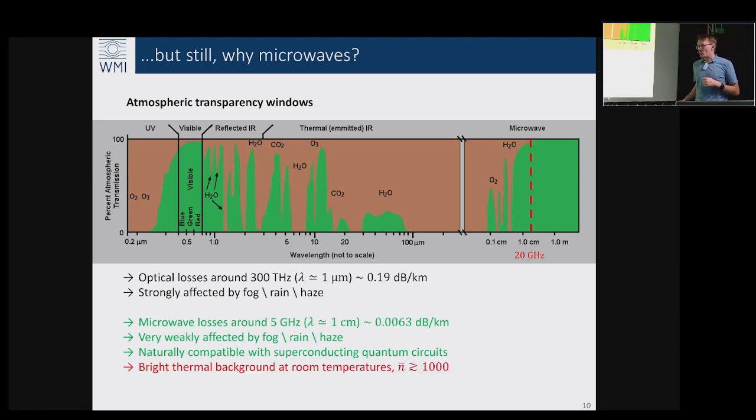The problem nevertheless is that the number of thermal photons here is relatively large. Here we have a population which is negligible, and here we have usually more than 1000 noise photons per mode. So we need to learn how to deal with this bright thermal background in order to uncover the open air microwave QKD and communication potential.